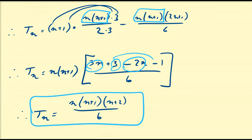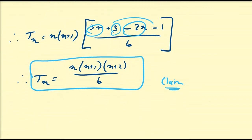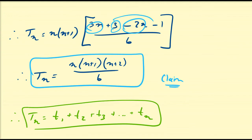So our claim for the nth tetrahedral number is n(n+1)(n+2) over 6. Remember, there's also the representation that TN equals T1 plus T2 plus T3 all the way up to TN — the sum of the first n triangular numbers.